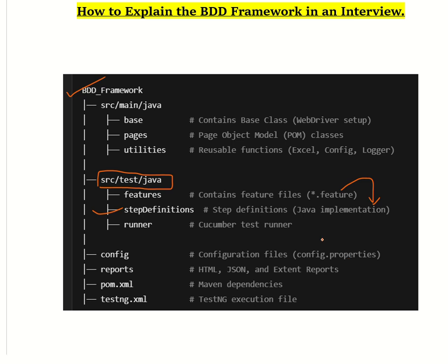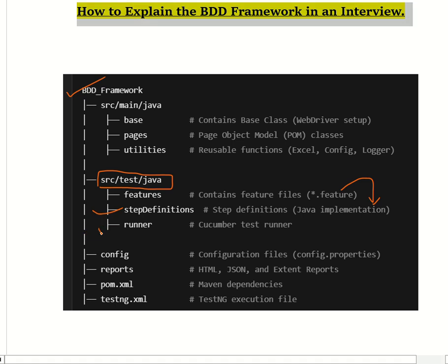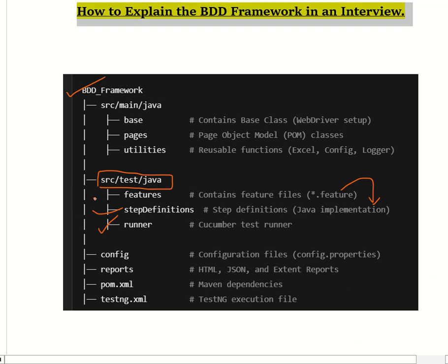The step definition links the Gherkin steps with the actual code using Cucumber annotations like @Given, @When, and @Then. The runner executes the test cases and tells Cucumber where the feature files and step definitions are located. The runner file uses JUnit or TestNG.